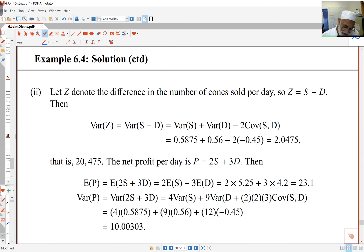If I put Z as the difference, because I was also after the difference between what's sold, then Z is S minus D. My formula says variance of Z is variance of S minus D, variance of S plus variance of D minus twice the covariance. If I put the numbers in there, I get 2.0475.